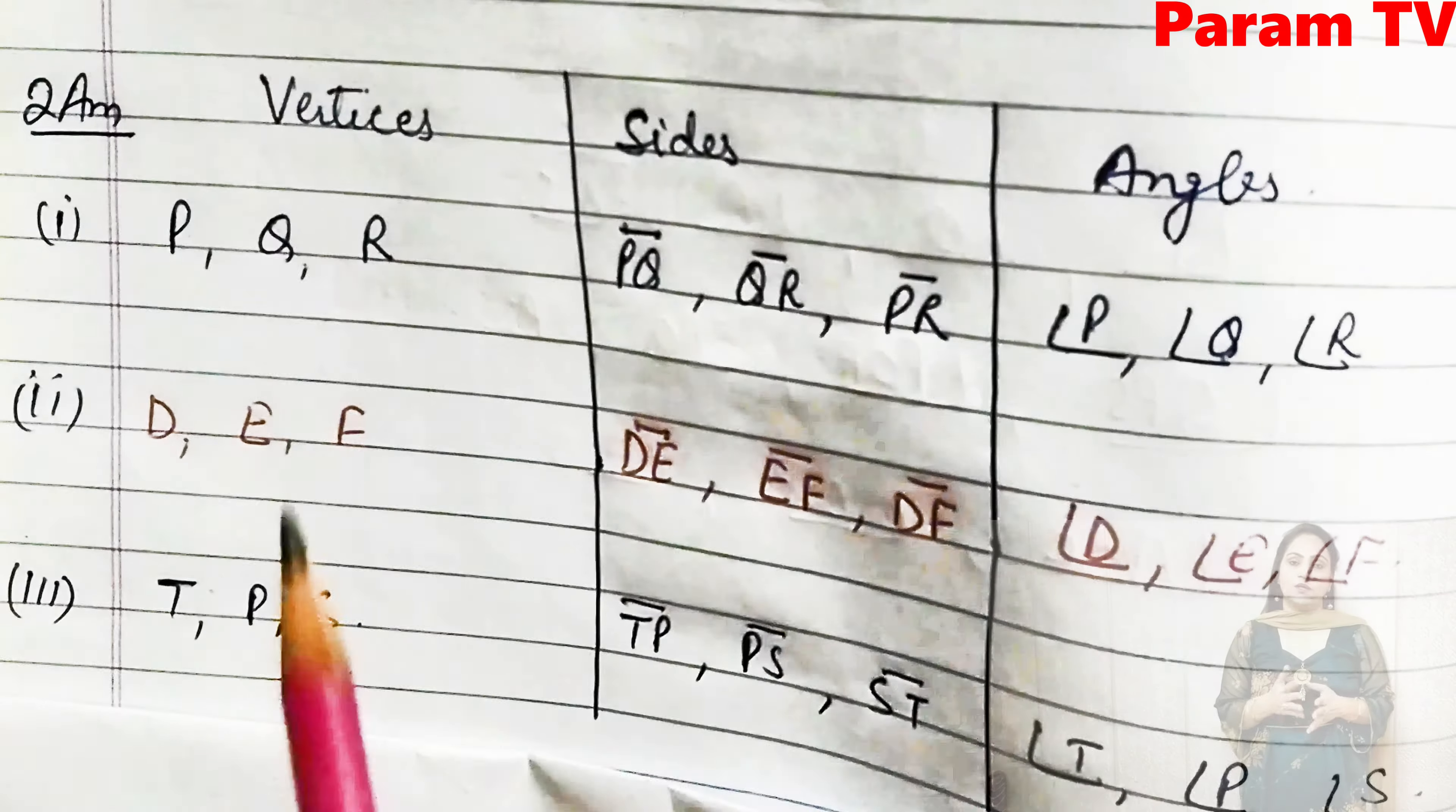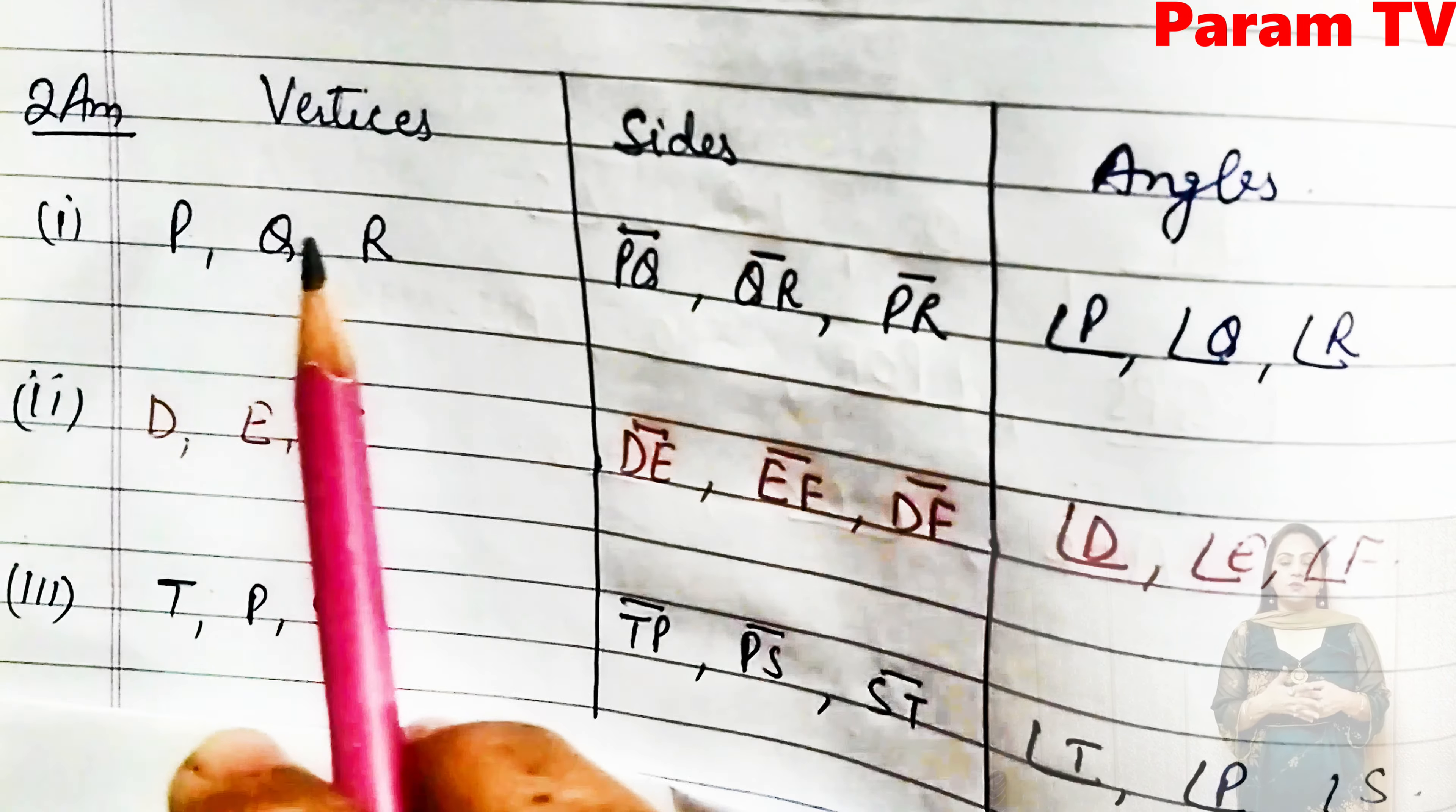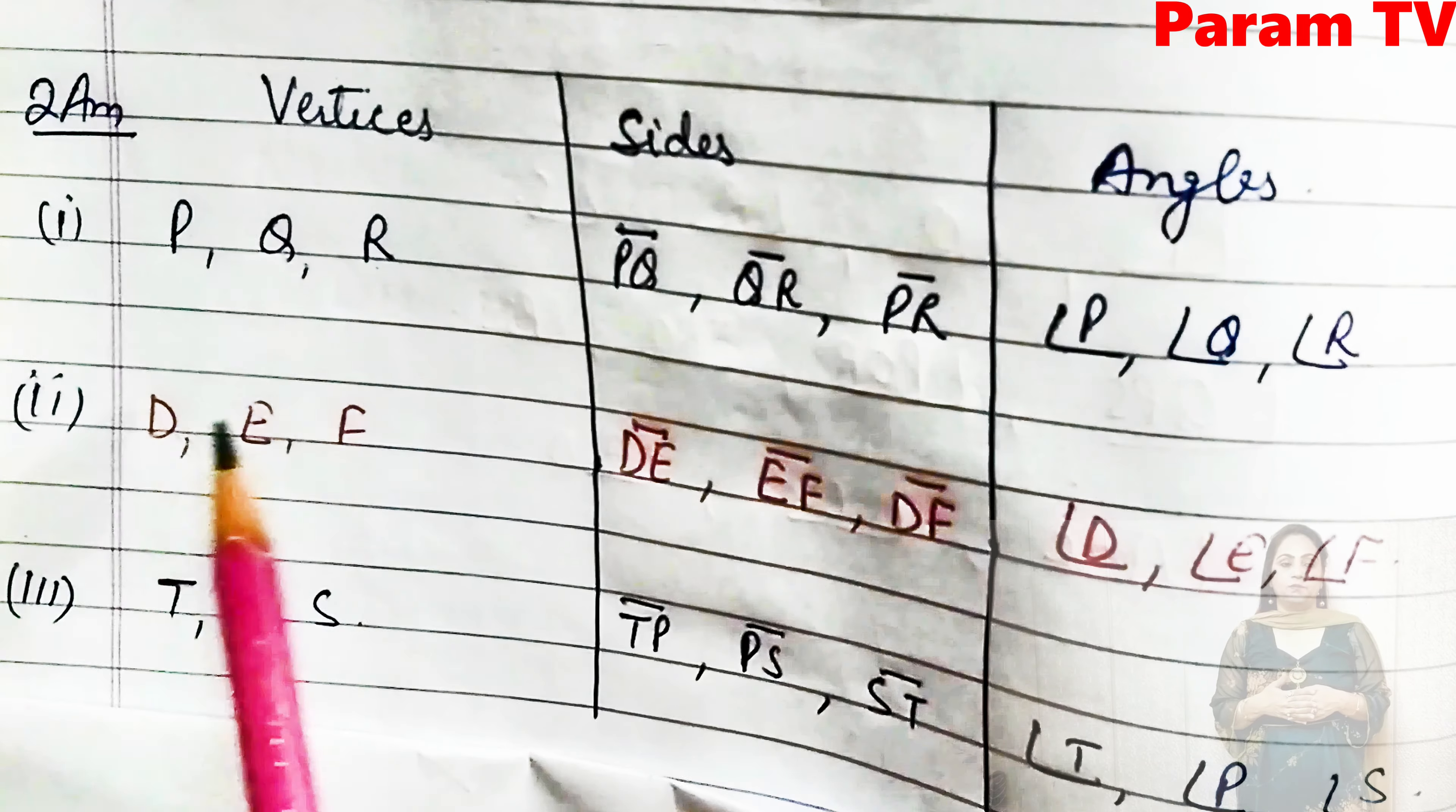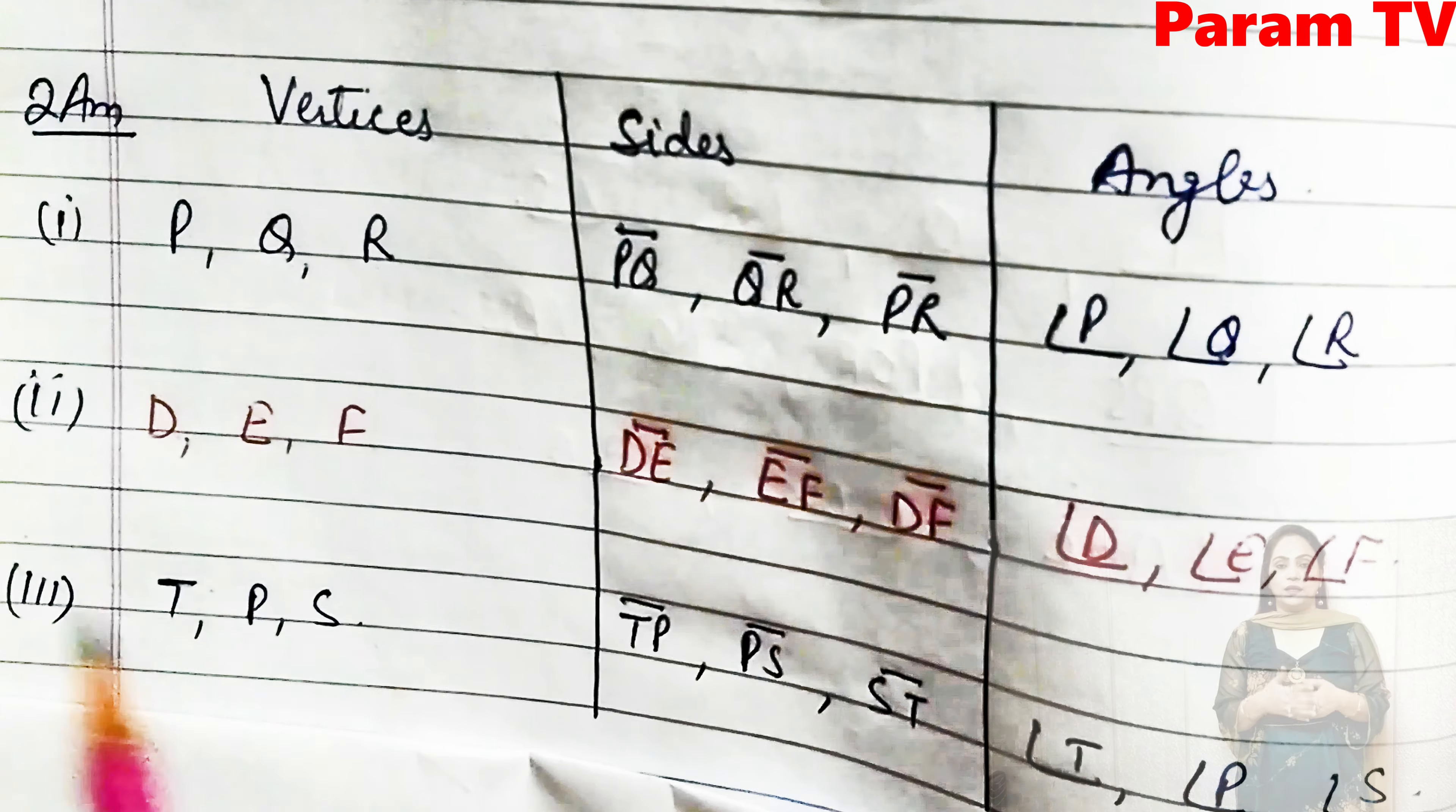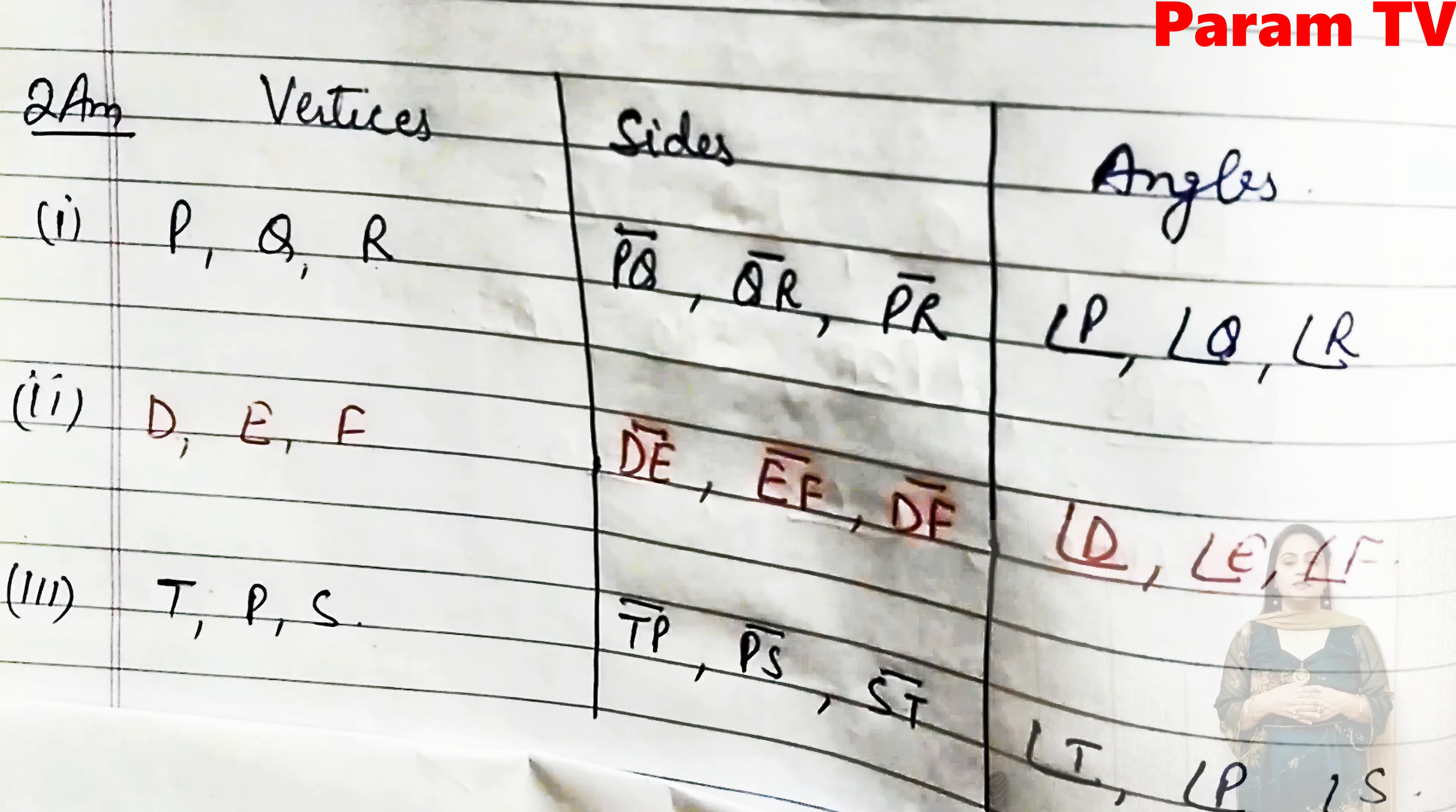Look at this. Vertices, sides, angles. PQR are the first vertices. Second are DEF, third are TPS. Three parts. Then these are sides and these are angles. You can write it in this way.